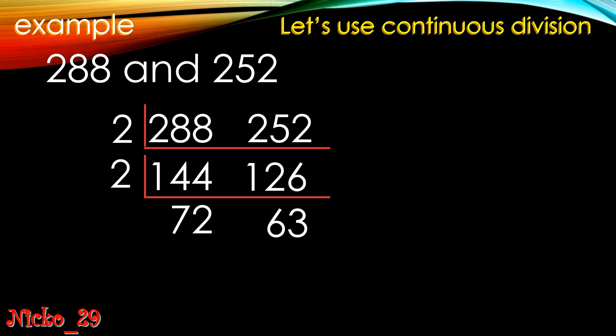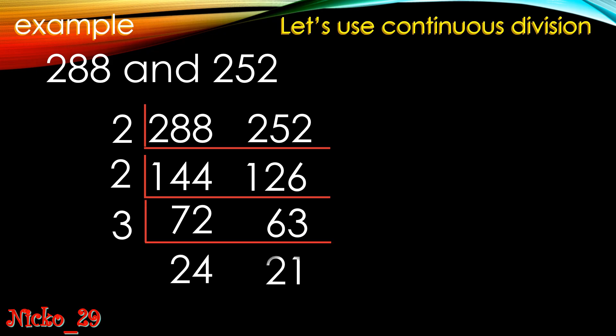Now 72 and 63 are not divisible by 2 anymore because 63 is odd. So let's use the next rule — for 3, the sum of digits must be a multiple of 3. For 72: 7+2=9, and for 63: 6+3=9, so both are divisible by 3. The answers are 24 and 21.